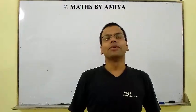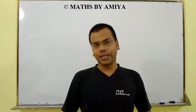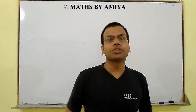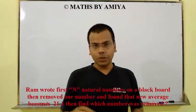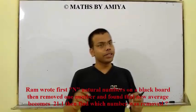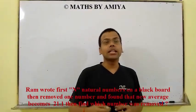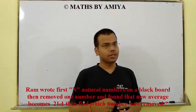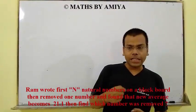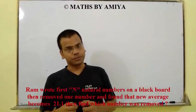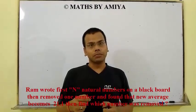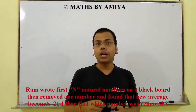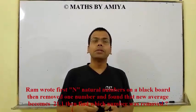Hello friends, what's up? Welcome to the world of maths by Amin. This is not a concept video but an alternate solution video. There is a question in front of you — try to read it and identify how we can solve it. Trav wrote the first n natural numbers on a blackboard, then removed one number and found that the new average is 21.1. Find which number is removed.